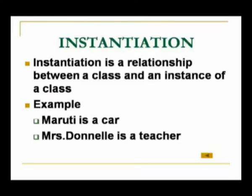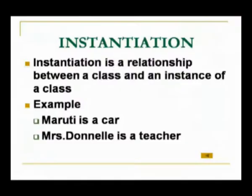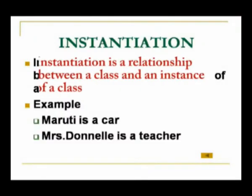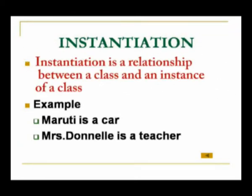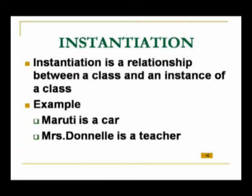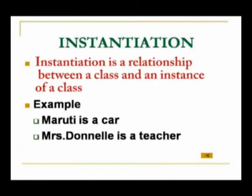Instantiation comes with respect to objects — an object is an instance of a class. When we create an object of a class, it is called the process of instantiation. It is a relationship between a class and an instance of a class, a relationship between a class and an object.